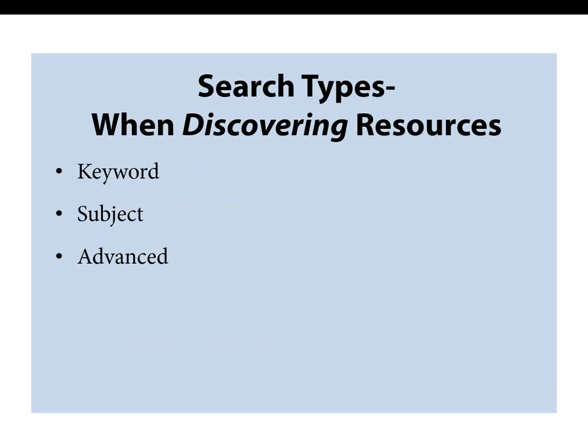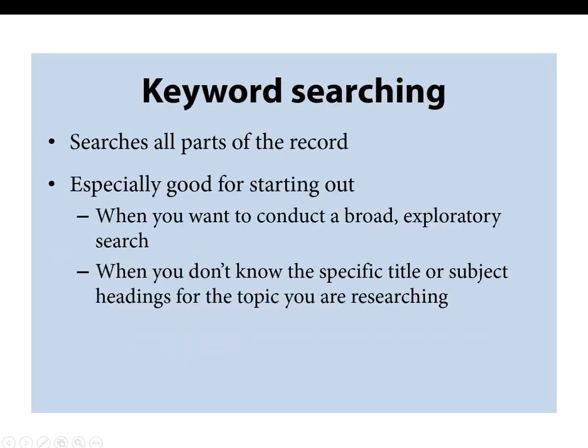Keyword, subject, and advanced searches are useful for discovering resources rather than looking for a specific item. A keyword is a word or phrase that describes the main concept of a topic. A keyword search is good for starting out and is usually the default search in any catalog. You can start with words that generally describe what you're looking for, then either narrow in by adding more words, or broaden your search by taking a word out or trying different words. You can also use keyword searching if you don't know an exact title — say you're looking for the Barber book and you know it's about Massachusetts, so you type in those keywords.